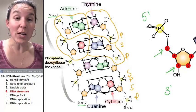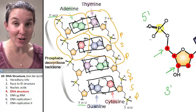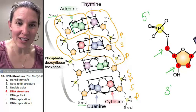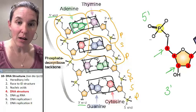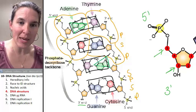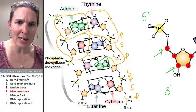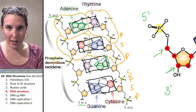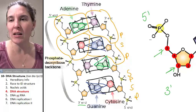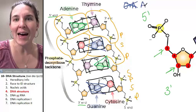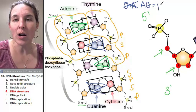Now, what do you notice about the nitrogen bases? Do you notice that some are big? These are big bases — this blue one is a big base, and here is another big one. Guanine and adenine are the big bases, and adenine and guanine are called purines.